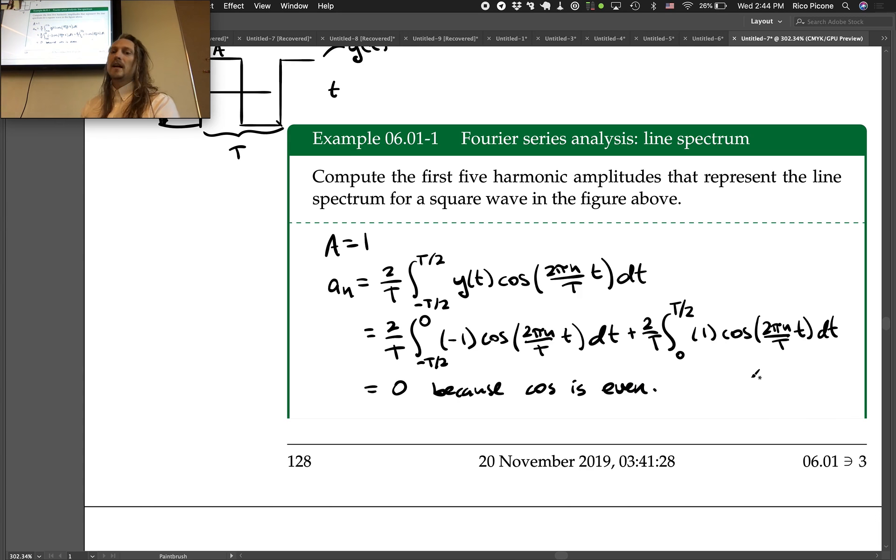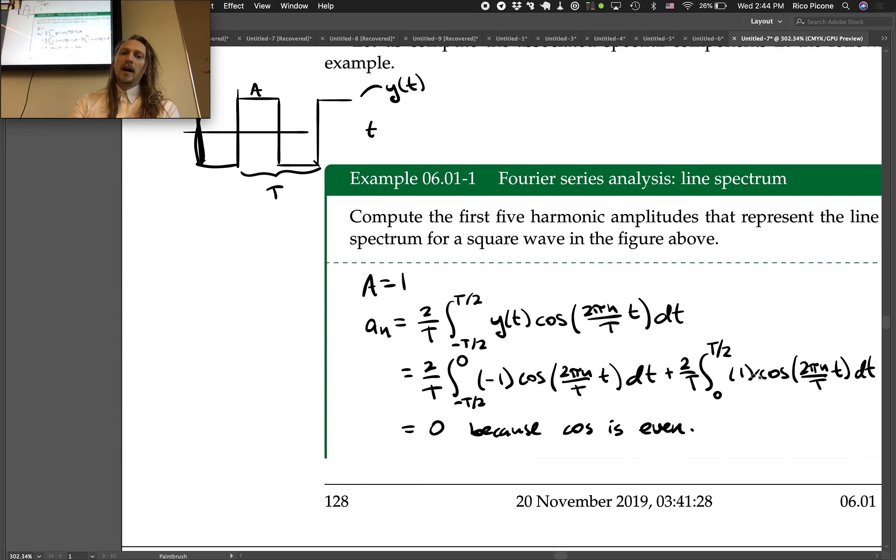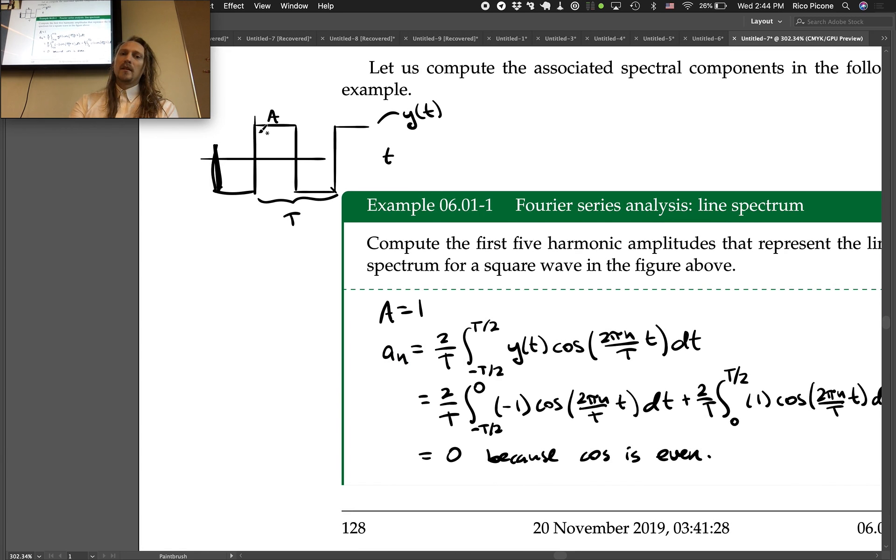It turns out this always happens when we have an odd function. This is an odd function that we started with. Our y of t is an odd function. If we start out with an odd function that we're writing the Fourier series of, the ans will always come out to be 0.